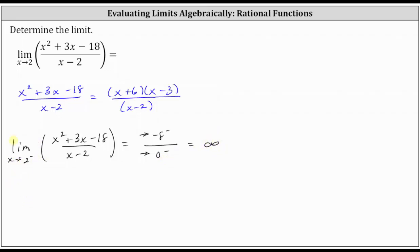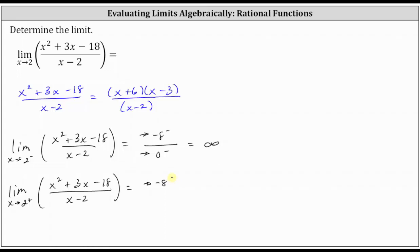And now let's consider the limit from the right of two. The numerator is still going to approach negative eight, but now, because we're approaching from values greater than two, it's going to approach negative eight from the right, or from values greater than negative eight. And the denominator of x minus two is still going to approach zero, but because we're approaching from the right with values greater than two, the denominator is now going to approach zero from the positive side or right side. So notice here, now we have a negative divided by a positive, and therefore the value is going to approach negative infinity.